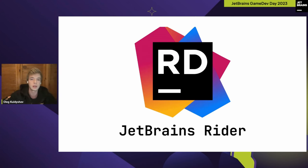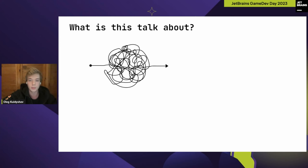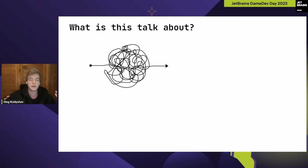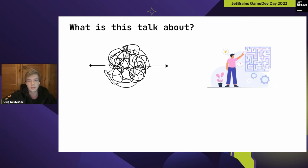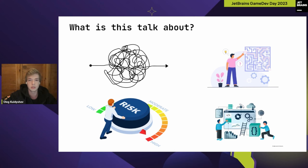Let me define some key points of this presentation. I'm going to cover testing really complex software, reveal some internal and external dependencies of Rider which make our product complex, tell you about problems one can meet when testing such a tool, how these problems can be solved, how we manage risks, and finally talk about automation in Rider.